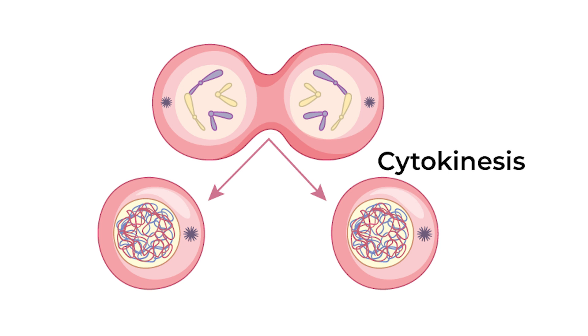Cytokinesis: in this stage, the cytoplasm divides, resulting in two daughter cells, each with a complete set of chromosomes.